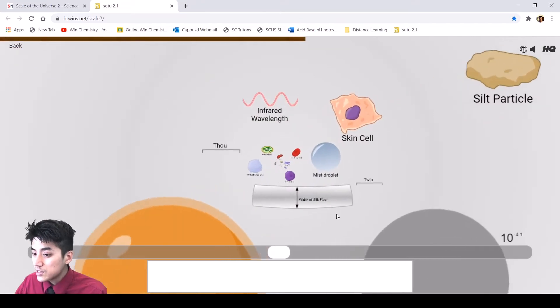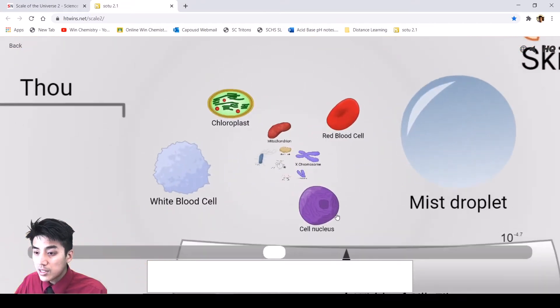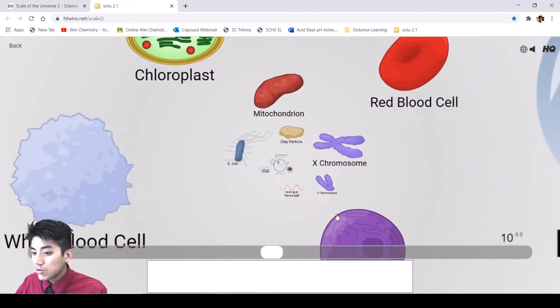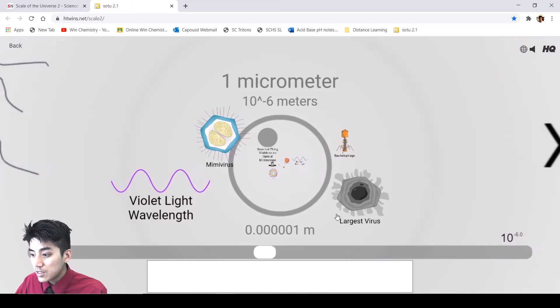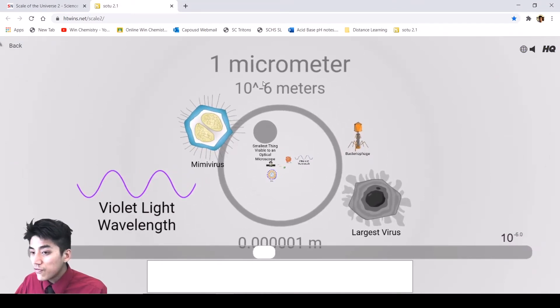Now I can zoom in even further, and we start to see skin cells, organelles that you learned about in biology, chromosomes, and 10 to the minus 6, if you look on your prefix chart, the prefix for that is micro. So basically the prefix is a name for a number. So micro means 1,000,000th. These objects here in front of me, like this virus here or this violet light wavelength, these are all things in the neighborhood of around 1 micrometer, things that are about 1,000,000 times smaller than you.